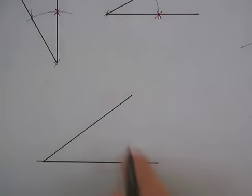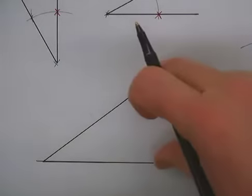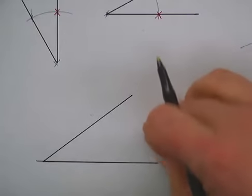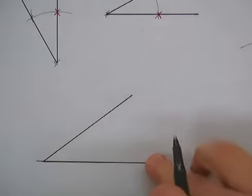All right, this time I'm going to bisect this angle, which means I want to cut it in half. I want to find what is exactly half of the distance, so half of it's this one, half of it's that one.